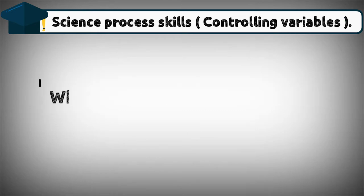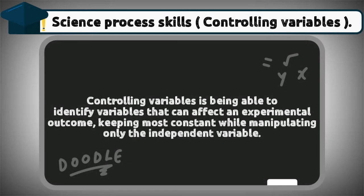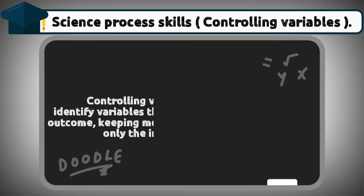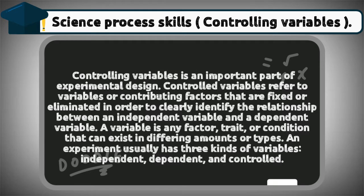Science process skills: controlling variables. What is controlling variables? Controlling variables is being able to identify variables that can affect an experimental outcome, keeping most constant while manipulating only the independent variable. Controlling variables is an important part of experimental design. Controlled variables refer to variables or contributing factors that are fixed or eliminated in order to clearly identify the relationship between an independent variable and the dependent variable.